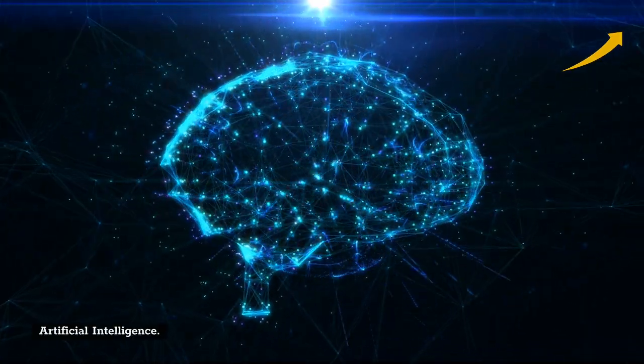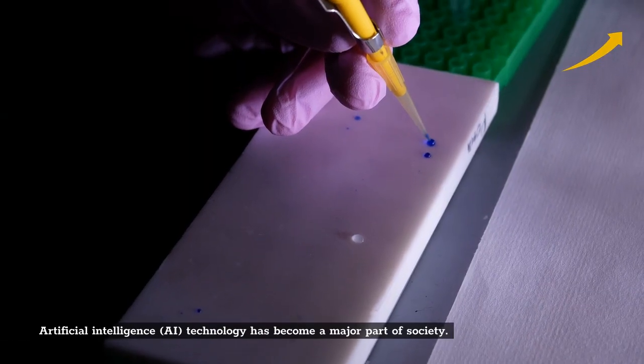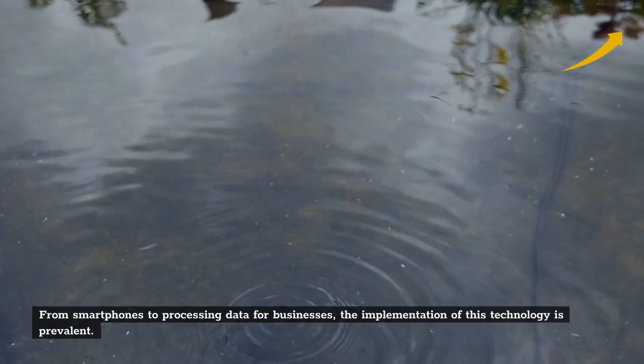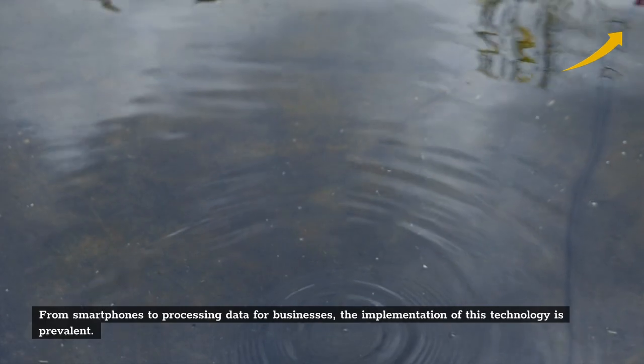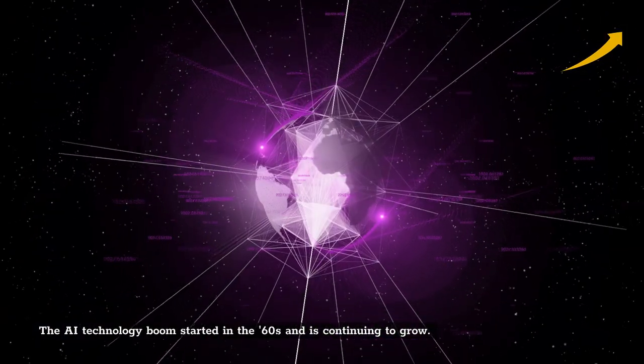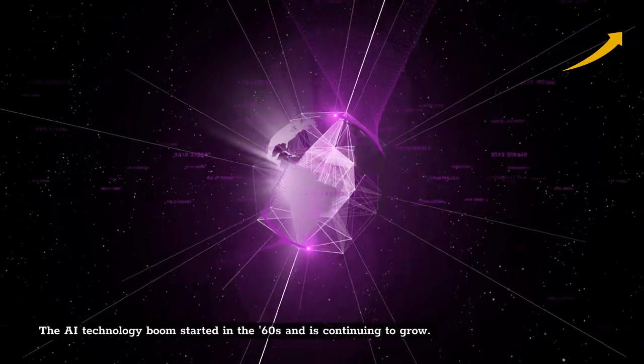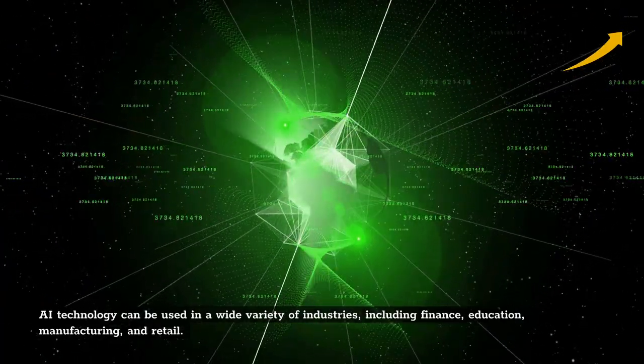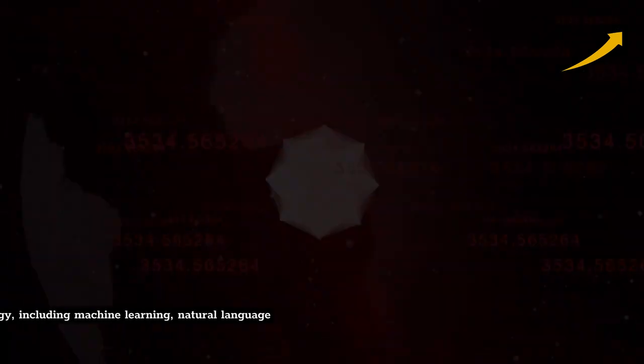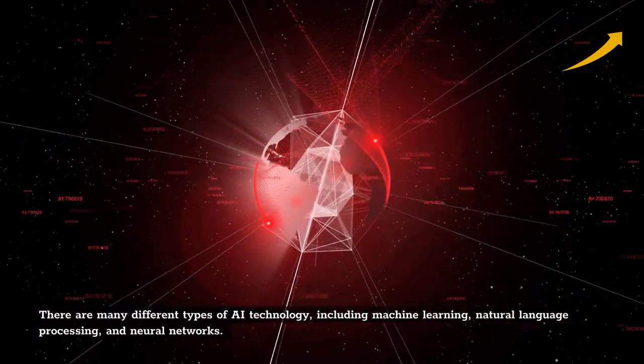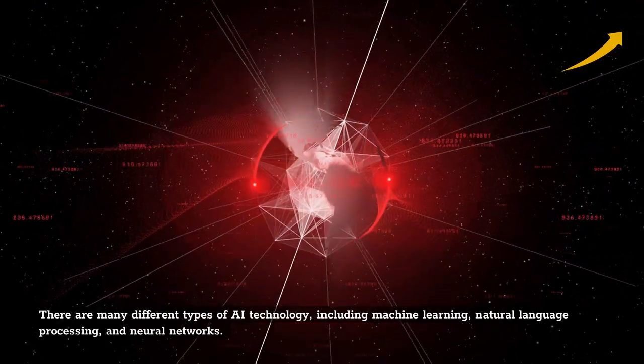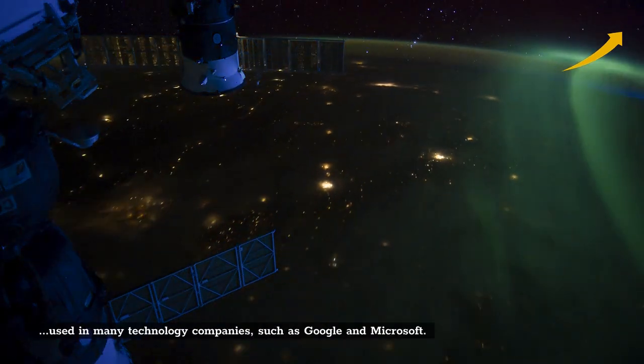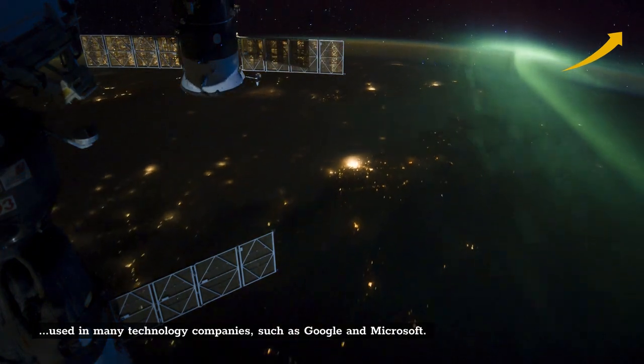Artificial intelligence. AI technology has become a major part of society, from smartphones to processing data for businesses. The implementation of this technology is prevalent. The AI technology boom started in the 60s and is continuing to grow. AI technology can be used in a wide variety of industries including finance, education, manufacturing, and retail. There are many different types of AI technology, including machine learning, natural language processing, and neural networks. One of the most popular types, machine learning, is used in many technology companies such as Google and Microsoft.